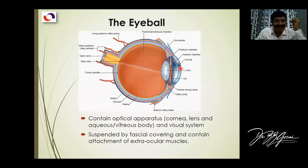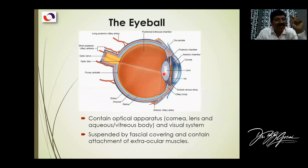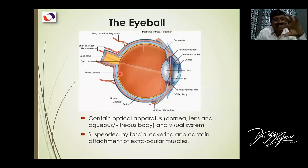Start with the cornea. There is a fluid here — this is the aqueous humor. Then there is a lens here. And then here is the vitreous humor. Vitreous humor does not contribute to the magnification. But the lens, the aqueous humor, and the cornea have a lot of functions in regard to the visual apparatus, for the light transmission. The vitreous humor is just a passage — it doesn't magnify something or change the direction.